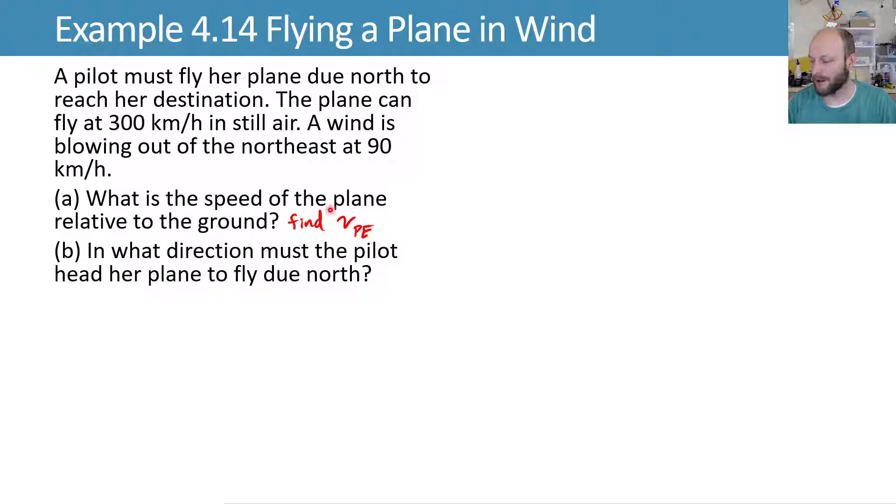So we want to know what's the speed of the plane relative to the ground, and in what direction must we head. The speed with respect to the ground I'm going to call VPE, the velocity of the plane with respect to the earth, and we'll call this some angle alpha. We'll draw a diagram to get our mind around what's going on, where we've got north and east specified. I need to fly north, so the velocity of the plane with respect to the earth has to be straight up.